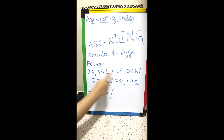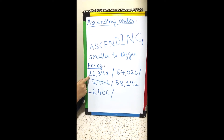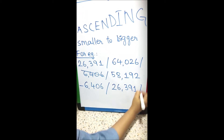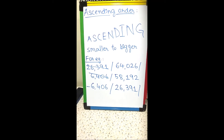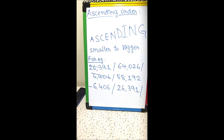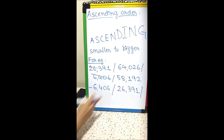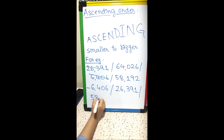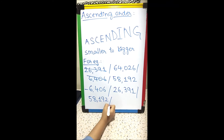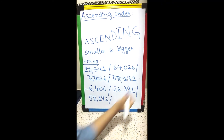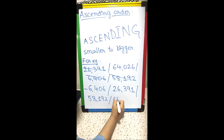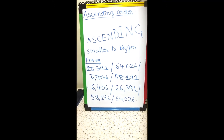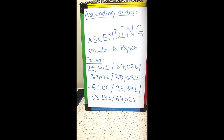The first digits are 2, 6, and 5 — so 2 is the smallest. The second number to write is 26391; cancel it out. Now comparing the two remaining numbers, the first digits are 6 and 5, so 5 is smaller. The third number is 58192; cancel it out. The only number remaining is 64026. So we have arranged all four numbers in ascending order.